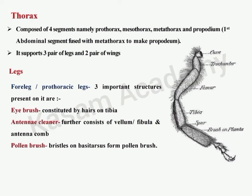The thorax is the middle part of the insect body, generally consisting of three segments: prothorax, mesothorax, and metathorax. In bees, the first abdominal segment fuses with the metathorax to form the propodium. The thorax supports three pairs of legs and two pairs of wings. The three pairs of legs are present on the prothorax, mesothorax, and metathorax respectively.